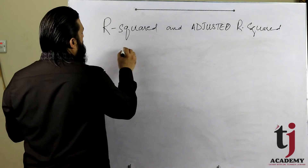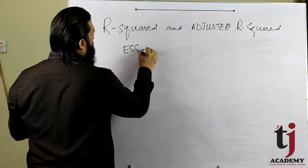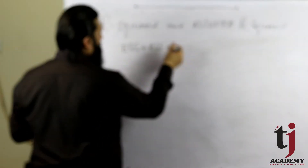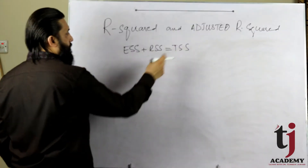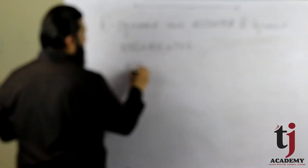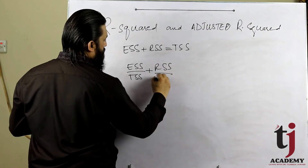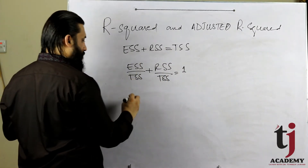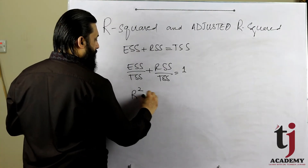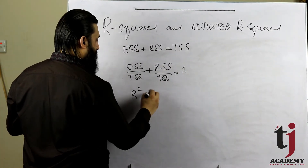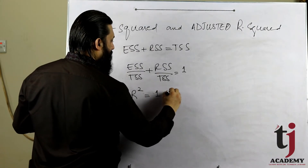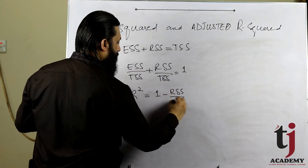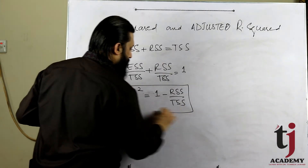جیسے ہم نے دیکھا تھا: Explained Sum of Squares + Residual Sum of Squares = Total Sum of Squares۔ اس سے: ESS/TSS + RSS/TSS = 1، یعنی R² = 1 minus RSS/TSS۔ یہ simple R² کا formula ہے۔